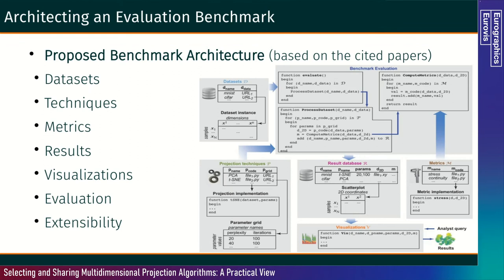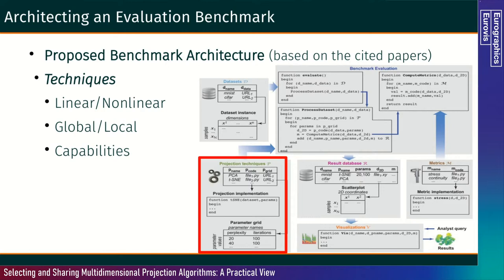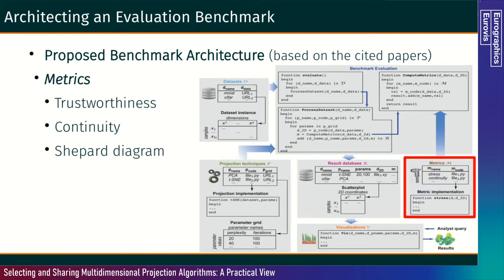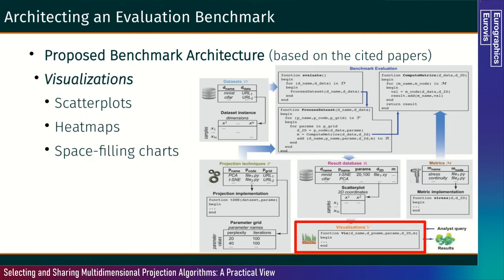The proposed benchmark architecture, based on both cited papers, is comprised of the following: datasets with properties like number of observations, number of dimensions, type of data, and sparsity; techniques grouped by type such as linear or non-linear, global or local; metrics such as trustworthiness, continuity, and Shepard diagrams; a result database to store results using binary files like Python pickle format, HDF5, or similar; and visualizations such as scatter plots, heat maps, and space-filling charts. You then run the evaluation by exploring parameter grids for all techniques and running all techniques over all datasets.